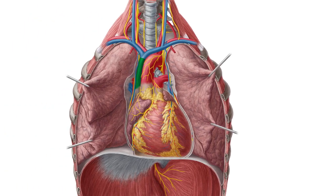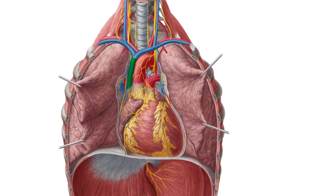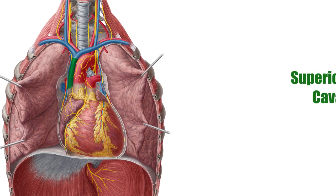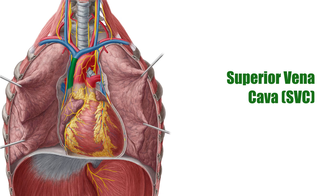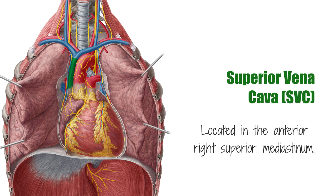Hello everyone, it's Matt from KenHub, and in this tutorial we will discuss the superior vena cava. The superior vena cava, also known as the cava, is a short but large diameter vein located in the anterior right superior mediastinum. We will refer to it as the SVC. You can see on this image of the anterior view open thorax, the SVC highlighted in green.